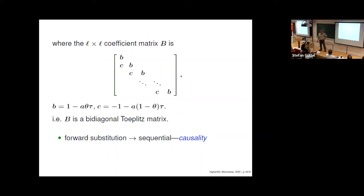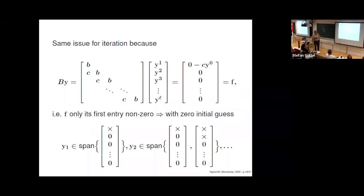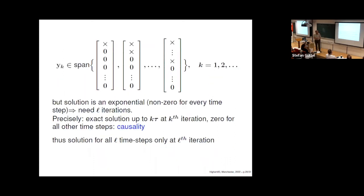The snag is that this is an entirely sequential process, reflecting what my colleagues in applied math think is absolutely innate: causality. You can't know what happens tomorrow from what happens today. The same issue arises for Krylov iteration on this bidiagonal matrix — with only the first entry of the initial vector nonzero, the k-th Krylov vector only has its first k entries nonzero, giving the exact solution up to k time steps and zero beyond. Iterative methods don't get around causality.